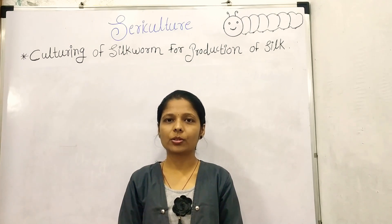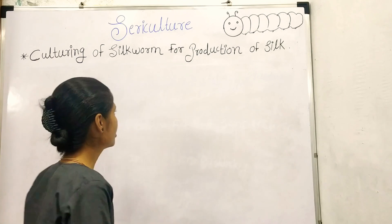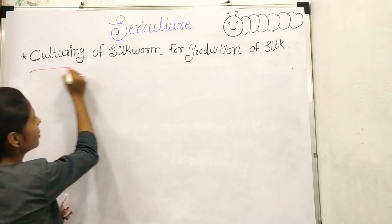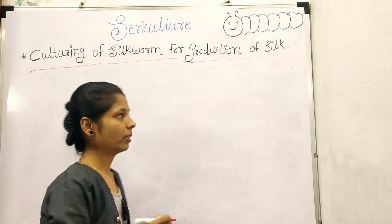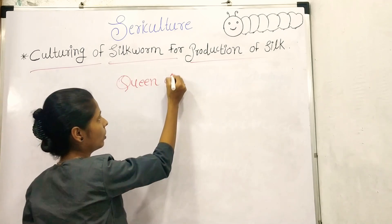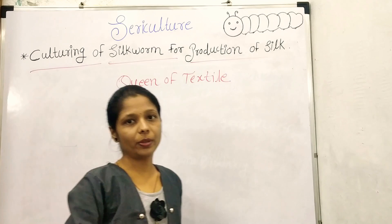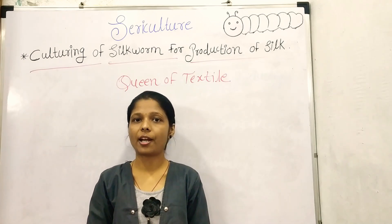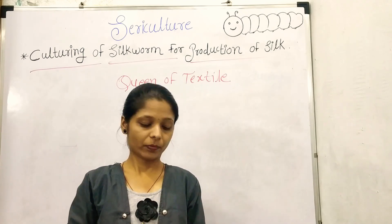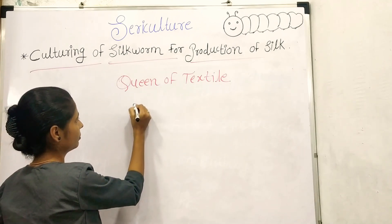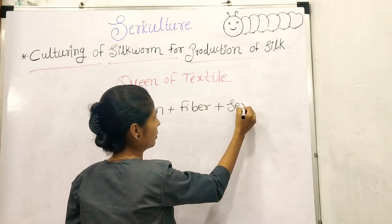Welcome friends. In this biology lesson, we will discuss sericulture. Sericulture means the culturing of a silkworm for production of silk. We know that silk is the queen of the textile industry, due to its properties like being light in weight, soft to touch, high durability, and high absorbance. Silk is a natural fiber and it is proteinous in nature.